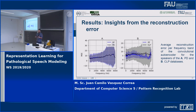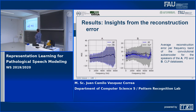Regarding the results of the reconstruction error for the convolutional autoencoder across frequency regions, we found some very interesting conclusions. For the case of cleft lip and palate, the healthy controls have a lower reconstruction error compared to cleft patients, especially in the higher part of the spectrum. This may be explained because the errors produced by cleft patients are mainly present in that region due to the presence of sibilant fricatives like 's' and 'sh'.